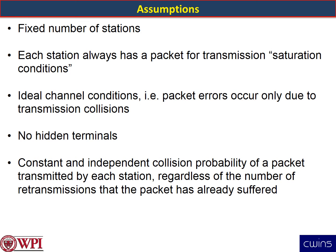For the assumptions: throughout the paper, Bianchi assumes a fixed number of stations. This is slightly different from the textbook assumption of an infinite number of stations. He also assumes that each station always has a packet to transmit, so there is no assumption about arrival conditions. This leads to the network saturation condition — you are looking at the maximum possible throughput of the network.